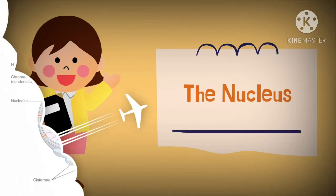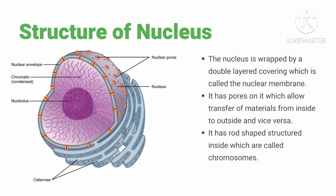The first organelle we will be studying is the nucleus. As you can see in the diagram, this is the structure of the nucleus. The nucleus is a double-layered membrane organelle. Some organelles do not possess a membrane, as we discussed in the case of prokaryotes. In case of eukaryotes and higher organisms, the nucleus is surrounded by a double layer covering known as the nuclear membrane. We have nuclear pores, the nuclear envelope, chromatin, and nucleolus. The function of nuclear pores is to allow the transfer of materials from inside to outside and vice versa.